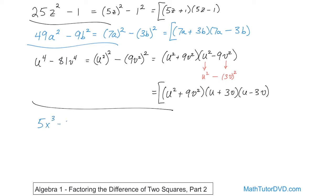What if I had 5 times x cubed minus 20x, and I say go ahead and factor this without telling you whether to use difference of two squares? You should know what's legal. Even if you don't see a difference of two squares here, you can pull a 5 out of both terms, and you can pull an x out of both terms — x is the greatest common factor. So let's do that first: 5x times x squared minus 4. The 5's already in place, so all I need is x squared inside. 5 times 4 is 20 and the x is accounted for.